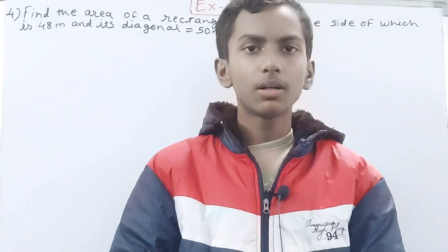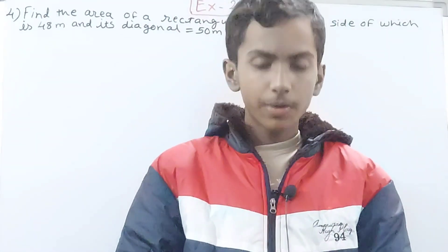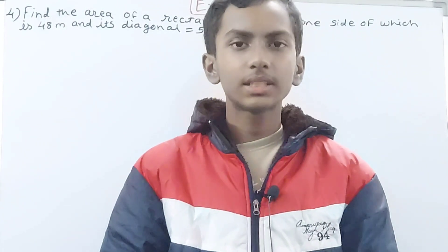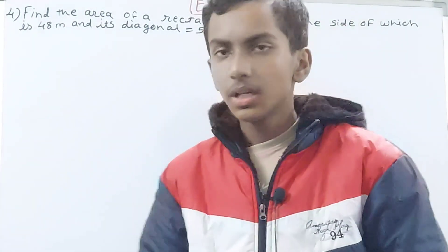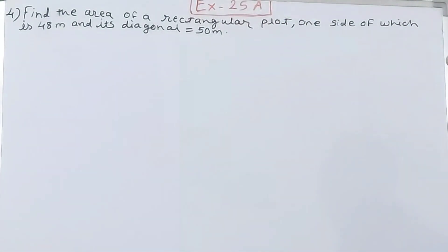Hello friends, welcome back to my YouTube channel Unlock Your Learning. In this video we are going to solve ICSE mathematics class 8, chapter 25, area of rectilinear figures, exercise 25, question 4. Find the area of a rectangular plot one side of which is 48 meters.